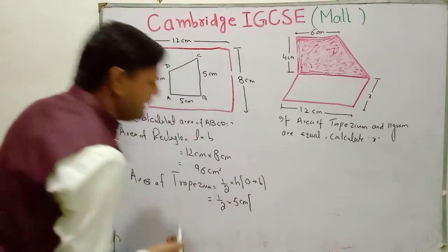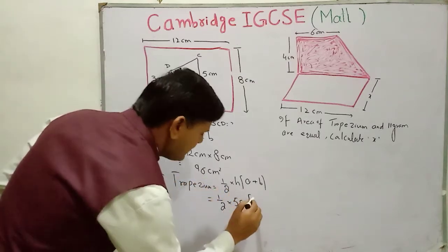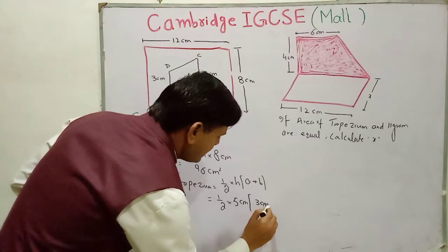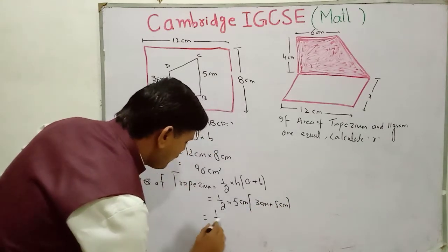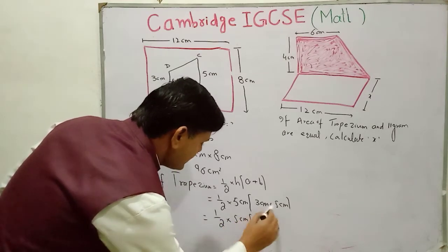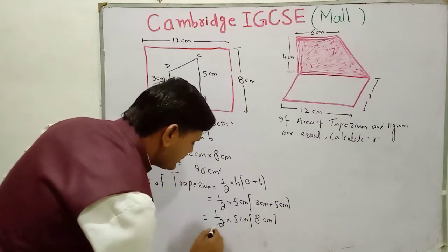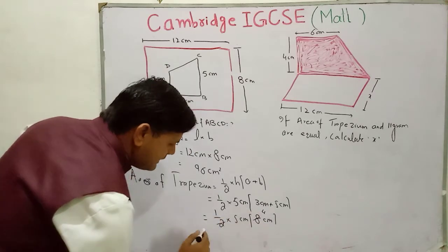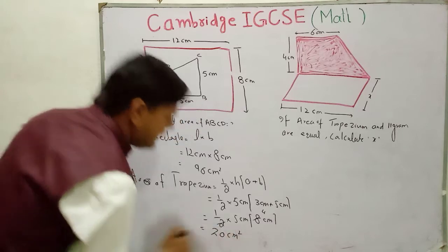The remaining two sides will be a and b. The remaining sides are three centimeters plus five centimeters. So: ½ × 5 × (3 + 5) = ½ × 5 × 8. Adding these gives eight centimeters, and dividing two into four, we get five times four, which equals 20 centimeters squared.